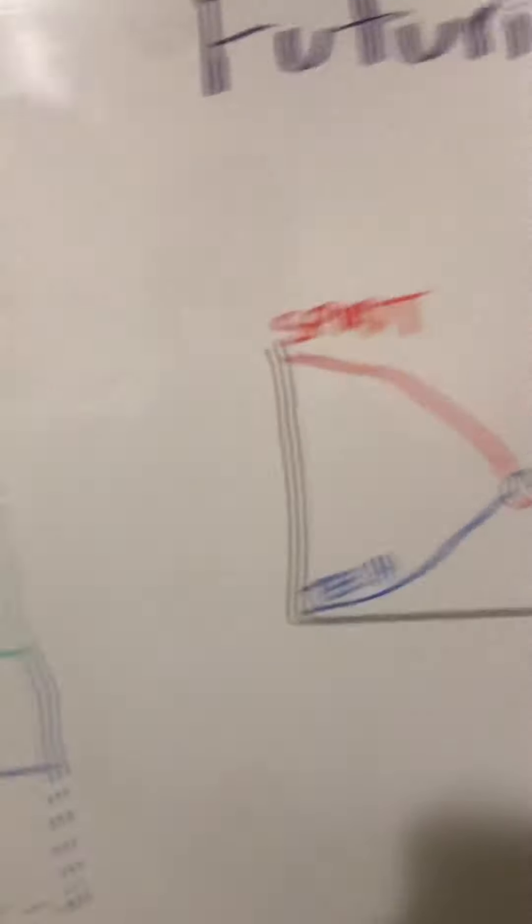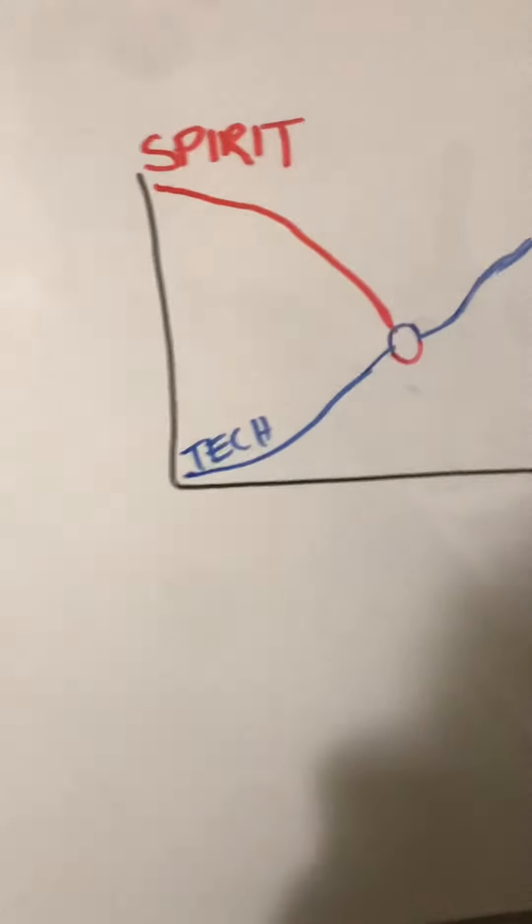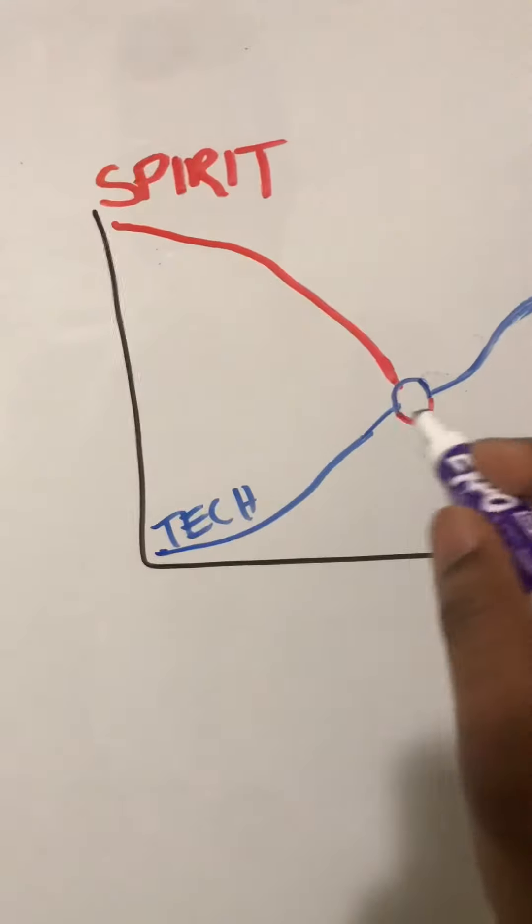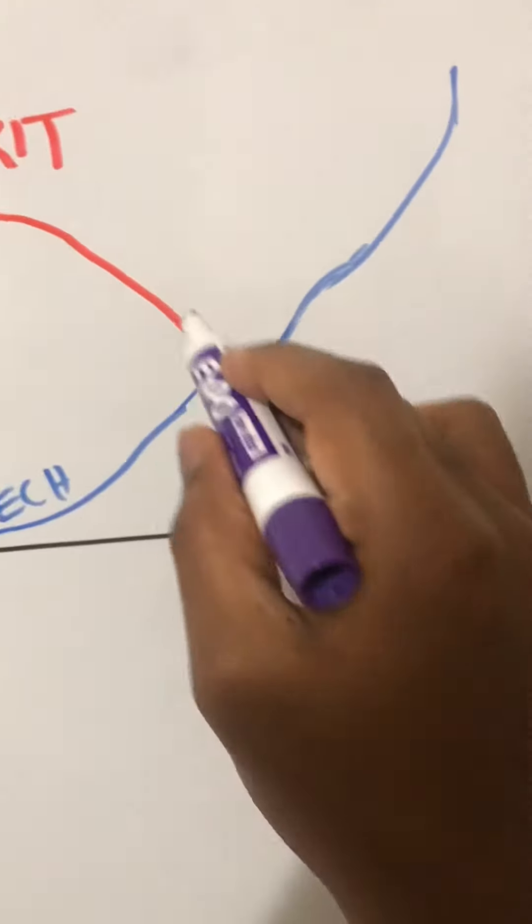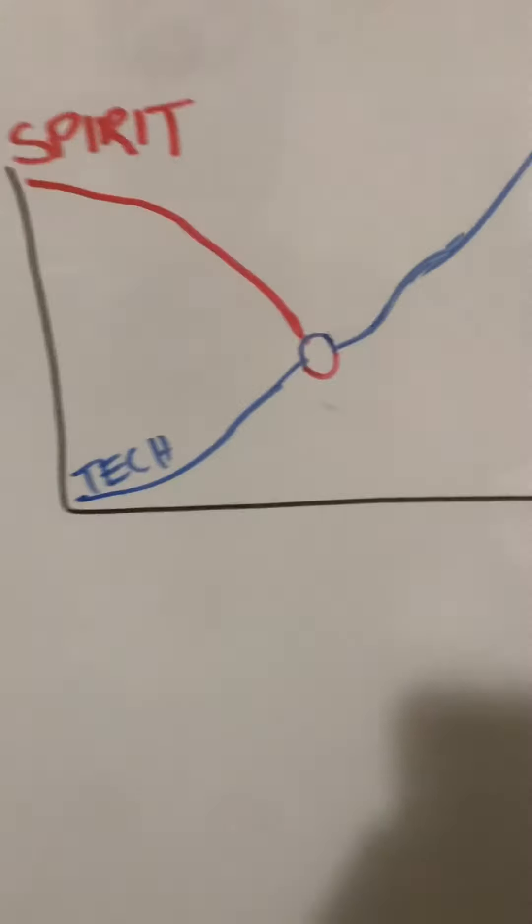So before I explain what this is, we're going to talk about this graph. So this is the juncture that we're at now, where our technology is increasing at a level above our spirituality. It seems like our spirituality has been declining, technology has been increasing.